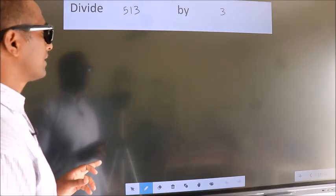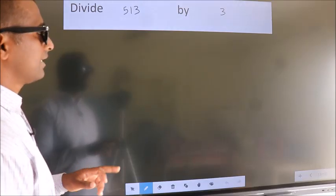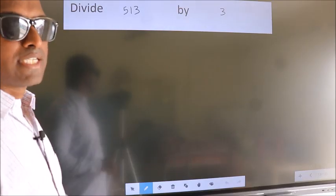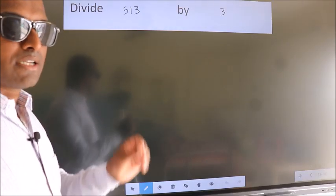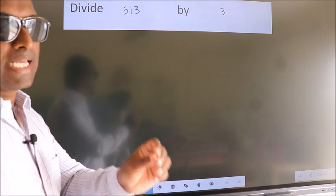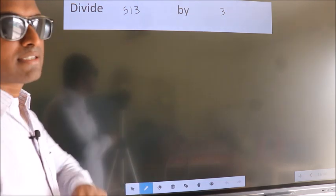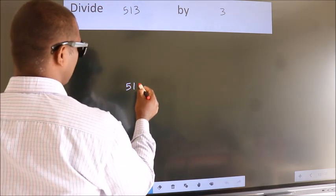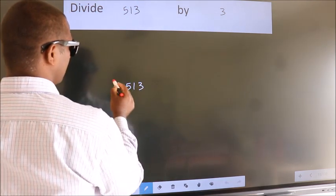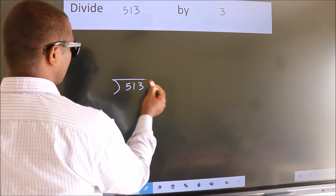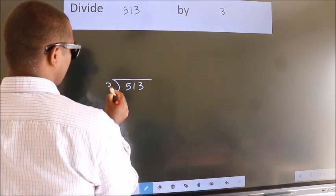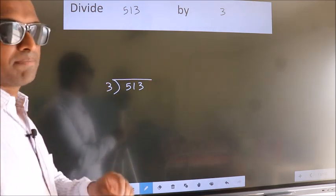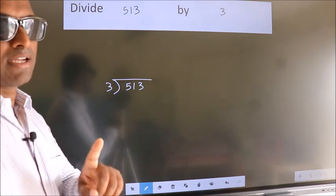Divide 513 by 3. To do this division, we should frame it in this way: 513 here, 3 here. This is your step 1.